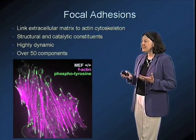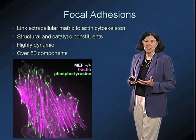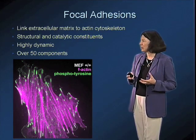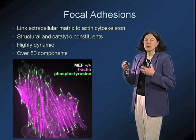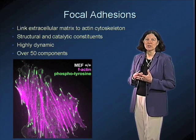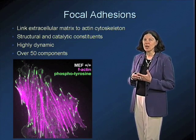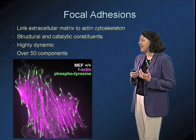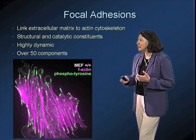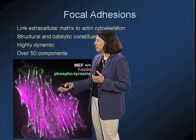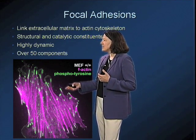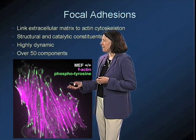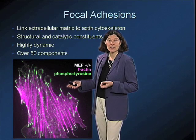There are over 50 components that are present with integrins at these focal adhesions, and these are highly dynamic structures where proteins are coming and going. There are both structural components and catalytic constituents — one example of a catalytic constituent being tyrosine kinases and their substrates.